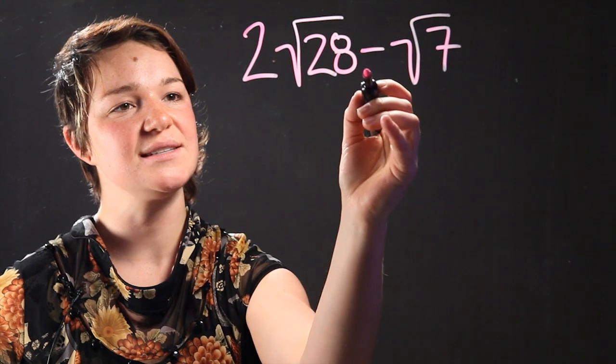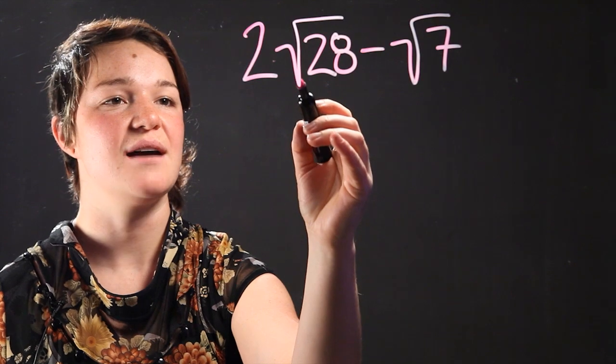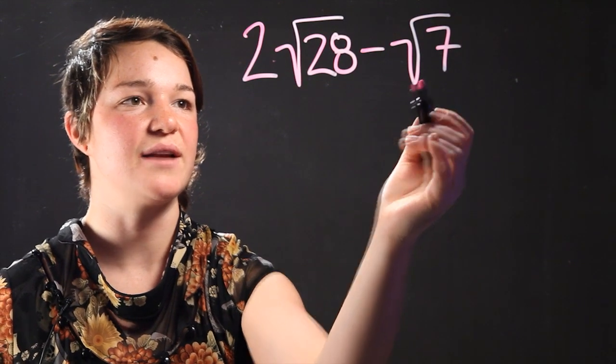let's do an expression like 2 square root of 28 minus square root of 7. So here we're subtracting two numbers and they have different radicals.